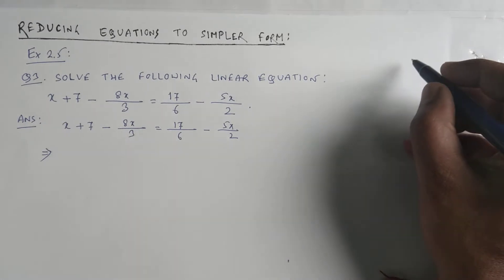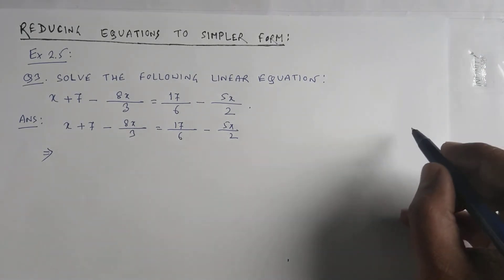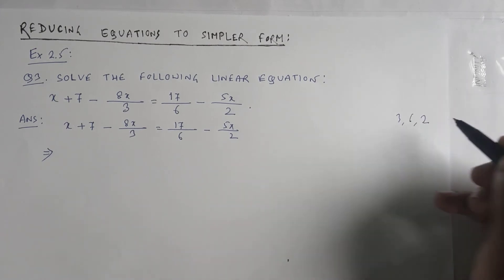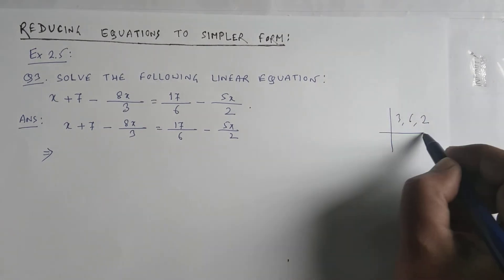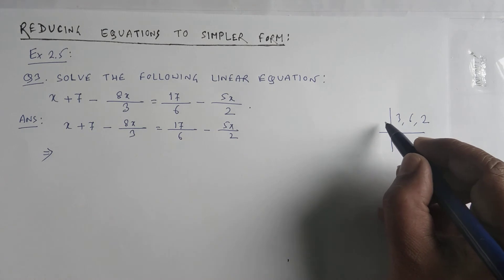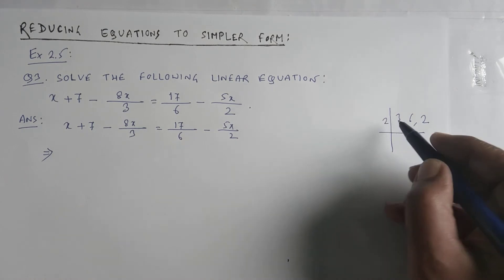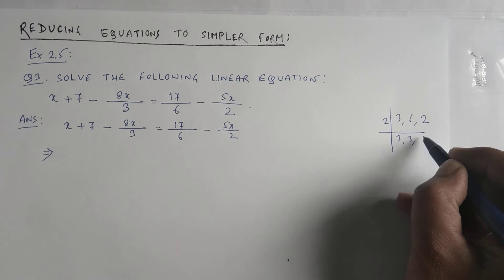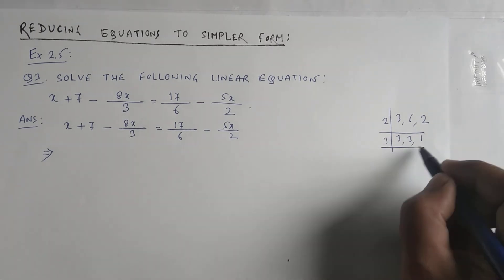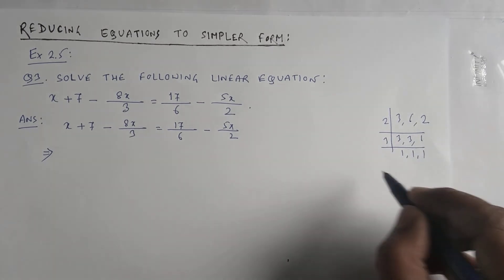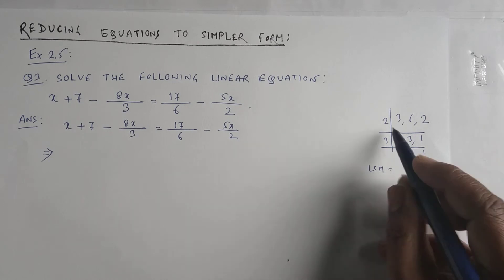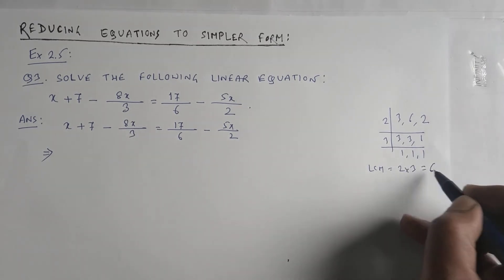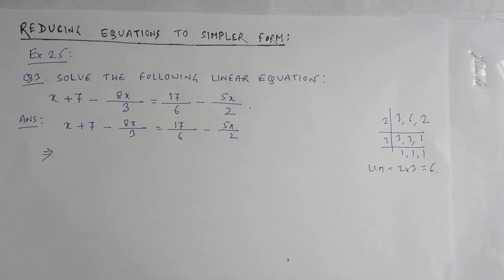The denominators are 3, 6, and 2. Finding their LCM: dividing by 2 gives 3, 3, and 1; then dividing by 3 gives 1, 1, and 1. So the LCM is 2 into 3, which equals 6. The LCM of the denominators 3, 6, and 2 is 6.